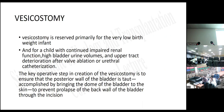Vesicostomy is reserved primarily for the very low birth weight infant and for a child with continued impaired renal function, high bladder urine volumes, and upper tract deterioration after valve ablation or urethral catheterization. The key operative step in creation of the vesicostomy is to ensure that the posterior wall of the bladder is secured by bringing the dome of the bladder to the skin, to prevent prolapse of the back wall of the bladder through the incision.